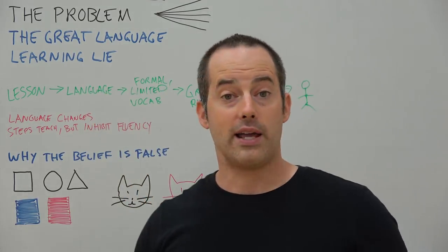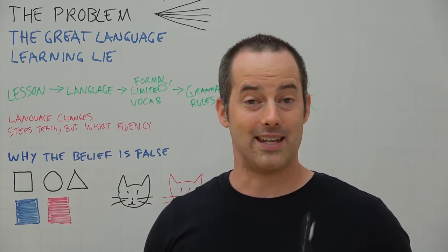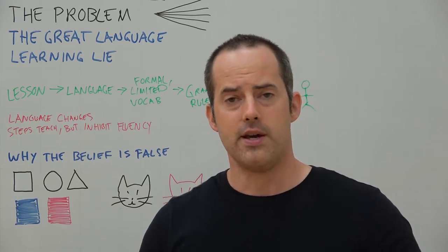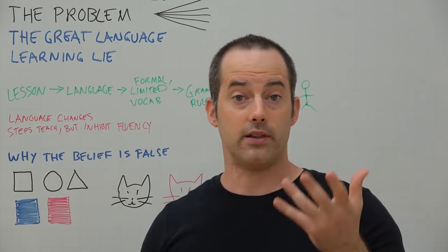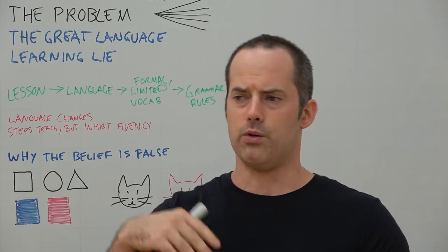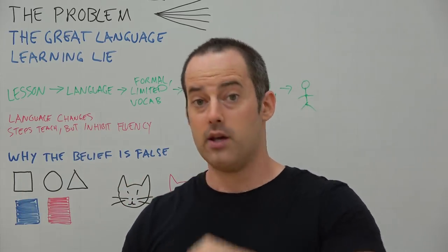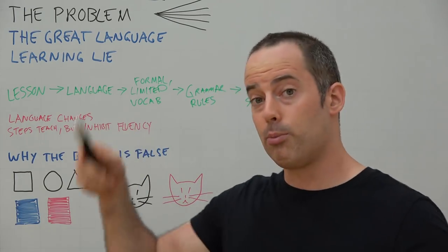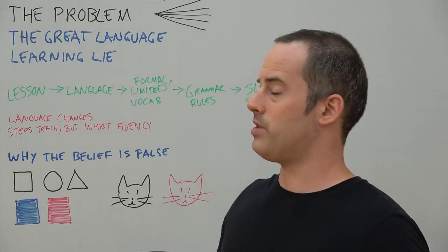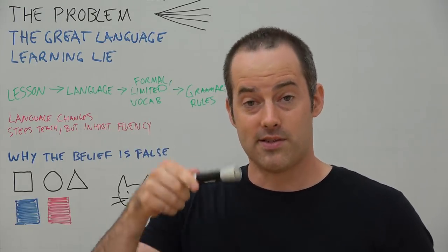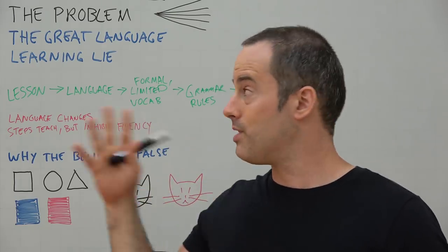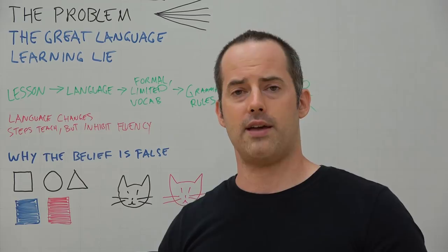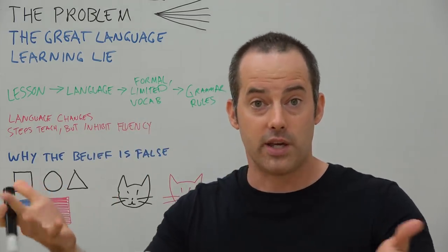The reason so many people have trouble being able to understand people or express themselves in conversations is what I call the great language learning lie — really the idea that there's such a thing as a second language. I know this sounds kind of weird and maybe controversial. Isn't it obvious that there are many different languages? You would learn your native language at home with your parents, and then when you go to school or a different country, you speak what's called a second language. As far as I'm concerned, I want people to understand that there really is no such thing as a second language.